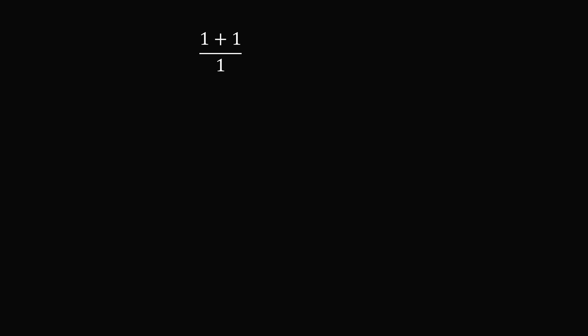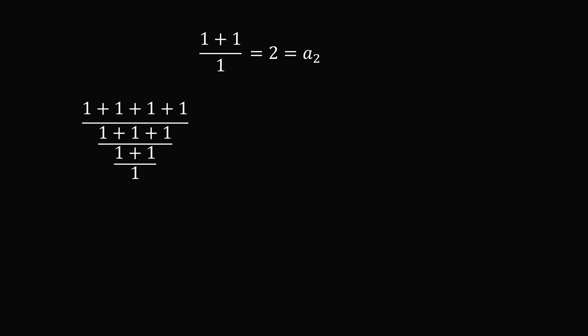Let's get started by evaluating 1 plus 1 all over 1. This is equal to 2, and we'll call this a2. Now let's consider the fraction with 4 rows. This is equal to 4 divided by 3 divided by a2. This is equal to 4 times 2, because a2 is equal to 2, all over 3. Notice we have a kind of pattern.